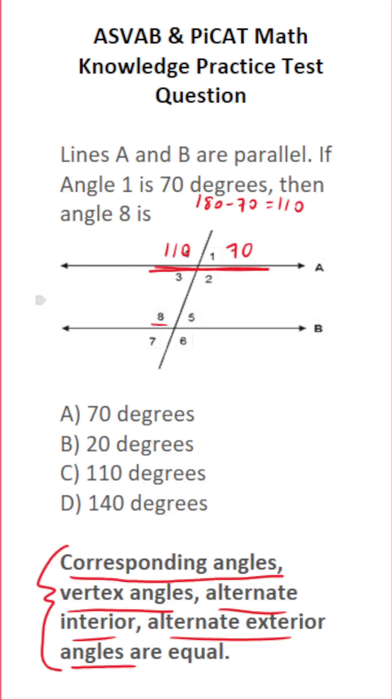So using this information, we could quickly figure out what angle 8 is. Again, angle 4 and angle 2 are vertical angles. That is, they share this vertex and they're on opposite sides of it. So I know angle 2 is 110 degrees.